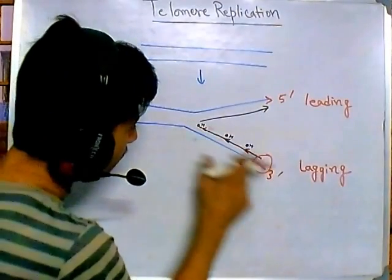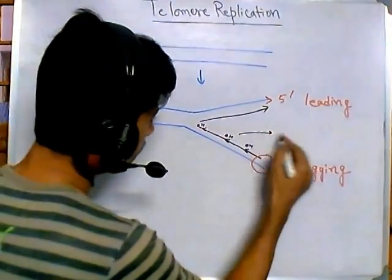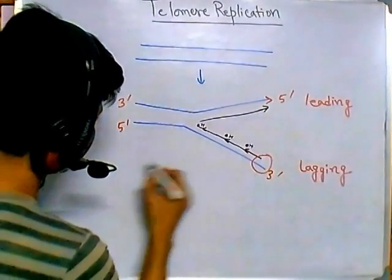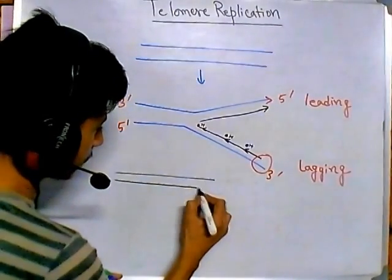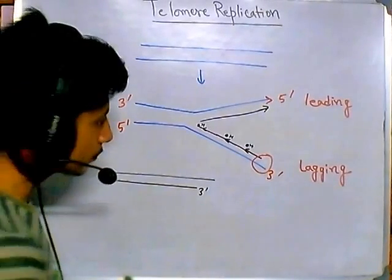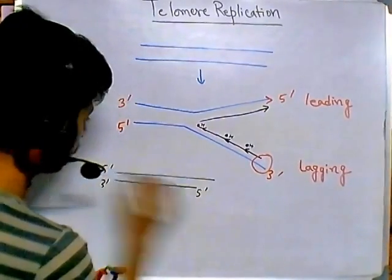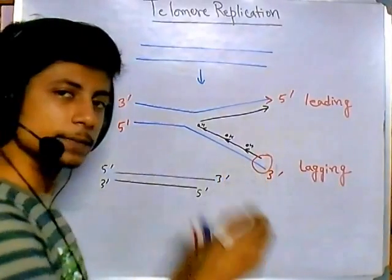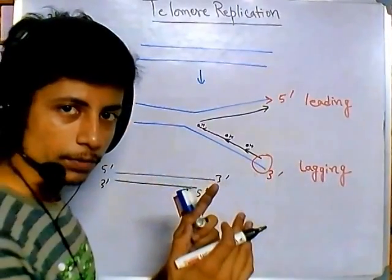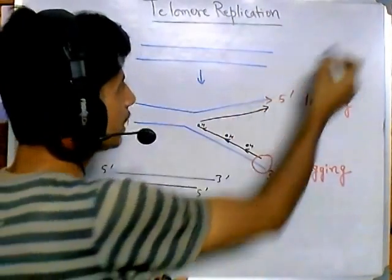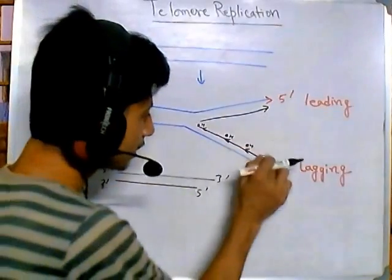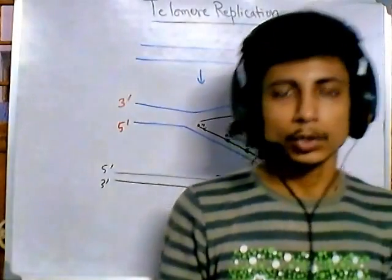The newly synthesized strand becomes shortened. If we draw this out: one end, another end, and the 3' terminal — it is getting shortened. Each time the daughter DNA is replicated, the 3' terminal region gets shorter. This is the problem associated with linear DNA. If the DNA were circular, this problem would never exist because there is no terminal region — but with linear DNA, this problem remains.